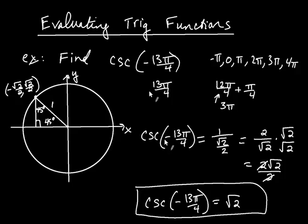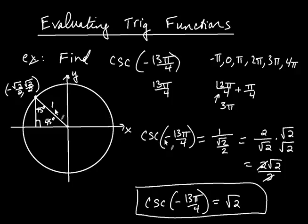Let's recap what we talked about. You plot your angle, but it's really important to think about how your angle is related to an integer multiple of π, because that makes locating it a lot easier. Once you locate your angle, you figure out your reference angle, draw the triangle, and then find the x-coordinate, the y-coordinate, and r, and simply take the ratio corresponding to the trig function you're working with. Let's try another one.